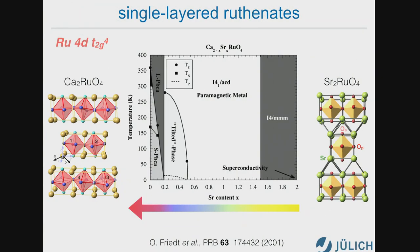The systems I want to address are ruthenates and materials involving atoms in the same row. Ruthenates have a 4D T2G⁴ configuration nominally, and they are particularly difficult to describe because if you look at the electronic structure, it looks simple, but many energy scales are very similar — not only the Coulomb interaction and the bandwidth, but also hopping, crystal field, spin-orbit interaction, and terms in the Coulomb vertex that are typically neglected. So you really need a general solver and state-of-the-art quantum Monte Carlo.